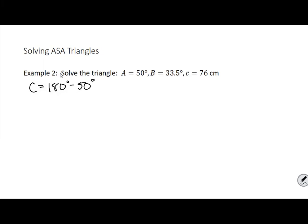That's A. Angle A is 50 degrees and then angle B is 33.5 degrees. And I've already done this and my answer is 96.5 degrees.